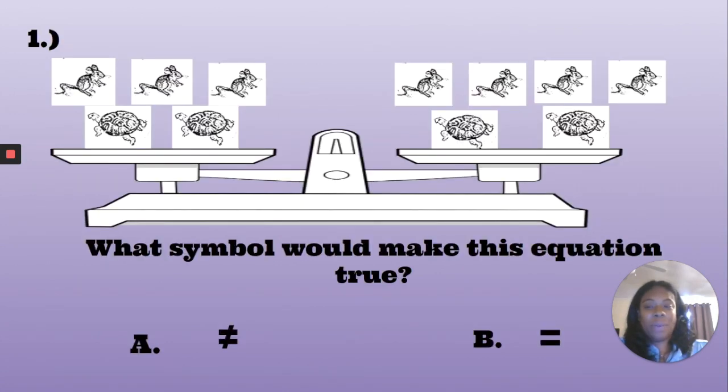Number one, which symbol would make this equation true? Well, there are three mice on one side and two turtles on the other, and there are four mice on the other side and two turtles below. So this shows me that we're comparing five to six, and that means that this equation proves to be not equal. Your answer should have been A.